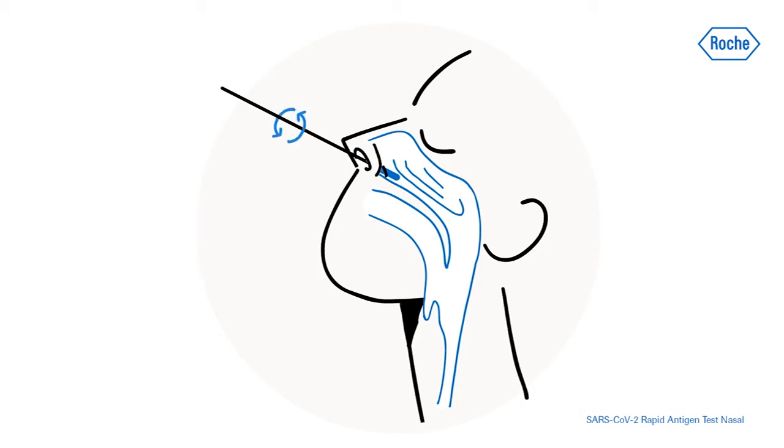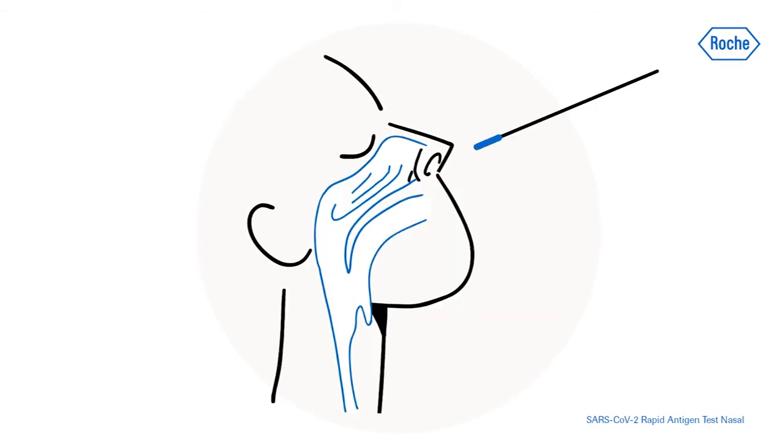Slowly rotate the swab in a circular path against the nasal wall at least four times for a minimum of 15 seconds. Repeat this with the same swab in the other nostril.